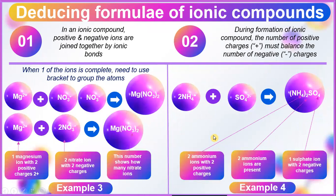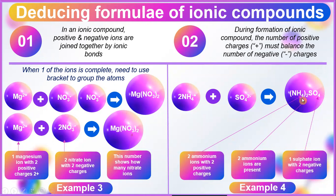There's another example for deducing formula of ionic compound. When one of the ions is complex, we need to use brackets to group the atoms. For example, the nitrate ion: NO₃ in bracket, 2. The sulfate ion SO₄²⁻ represents 1 sulfate ion with 2 negative charges, and 2 ammonium ions with 2 positive charges each.